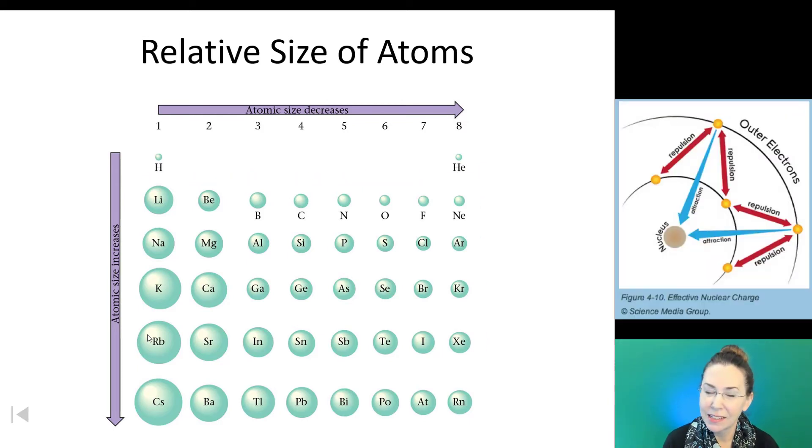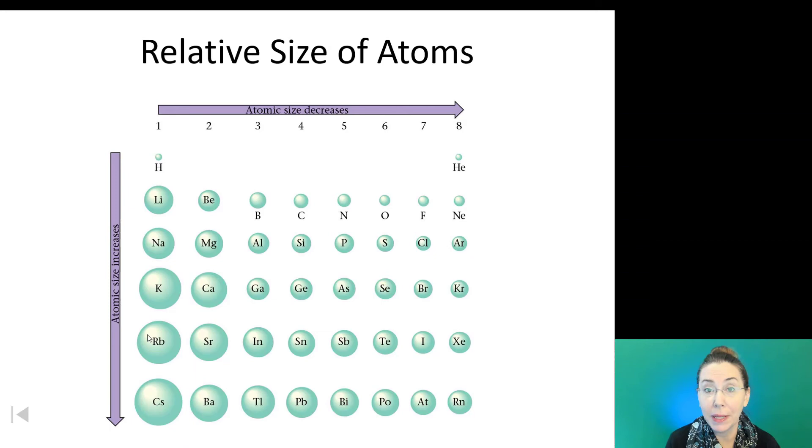Likewise, as we go down, however, they're getting larger. Not just because we have more shells, but we also have something happening called electron shielding or nuclear shielding. And that's where, because we're adding more layers, more shells, between the nucleus and that valence level, we're getting a decrease in that attraction. And that's allowing the atoms to be a little bit bigger.